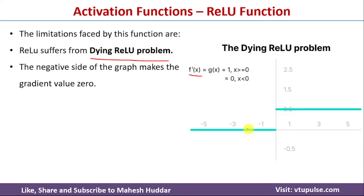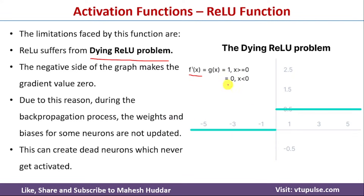If the value of x is less than 0 the derivative is 0, and if greater than 0 it is 1. Because the gradient term is 0 for x ≤ 0, during the backpropagation process the weights and biases for those neurons will never be updated. If the weights and biases are not updated, those neurons will be in a dead state — they will never get activated. This situation is known as the dying ReLU problem.